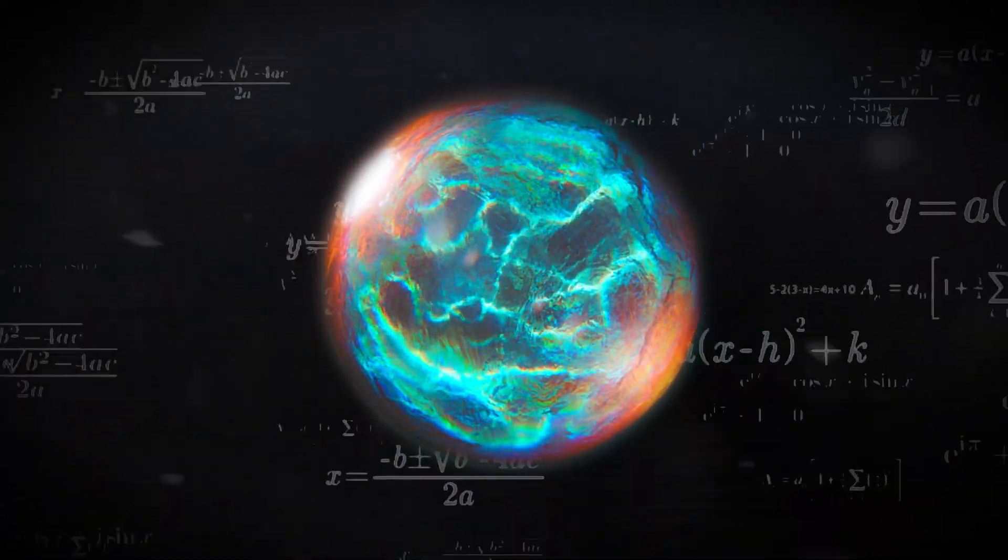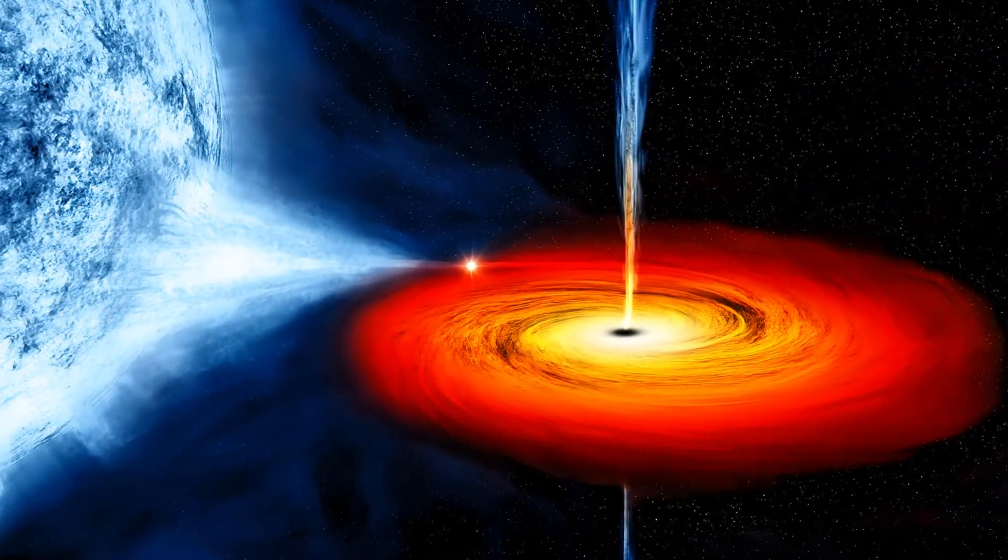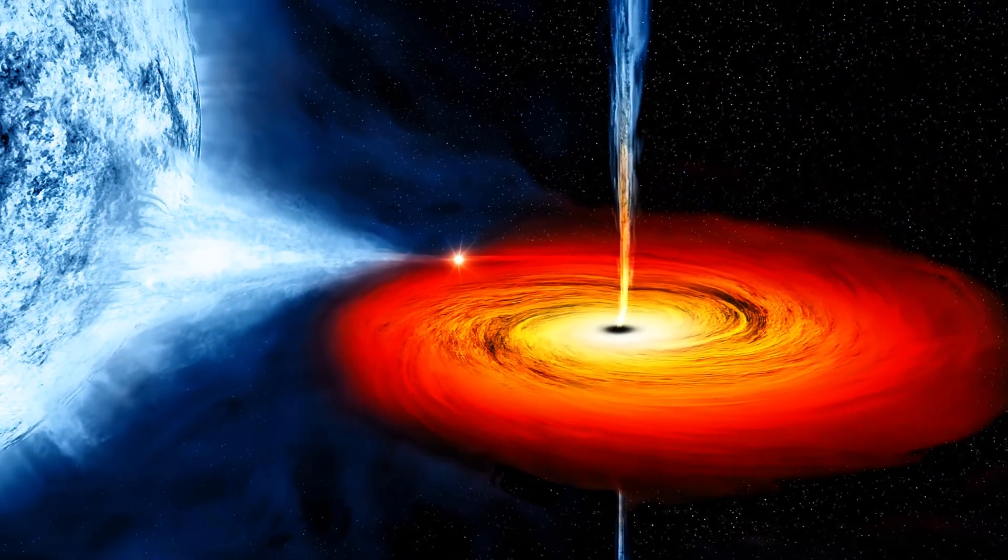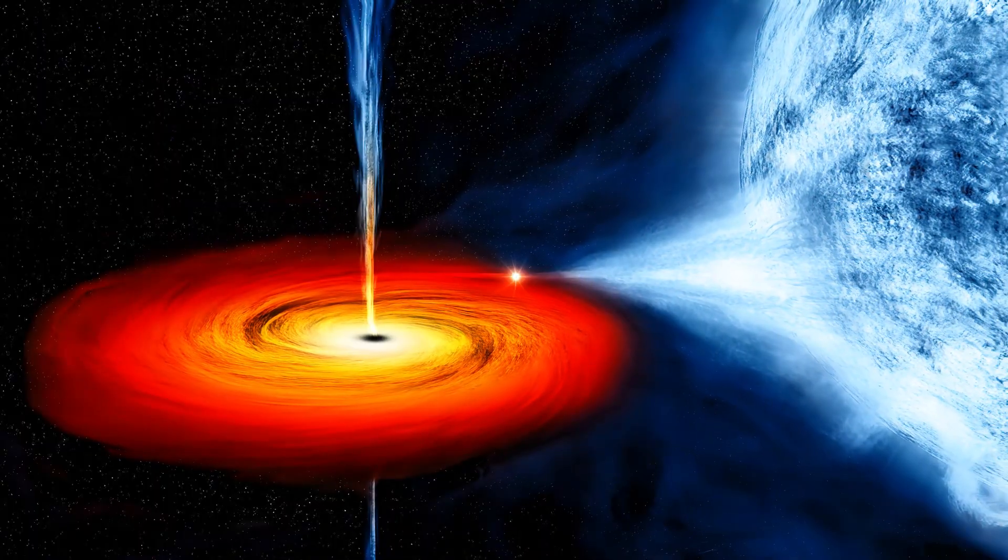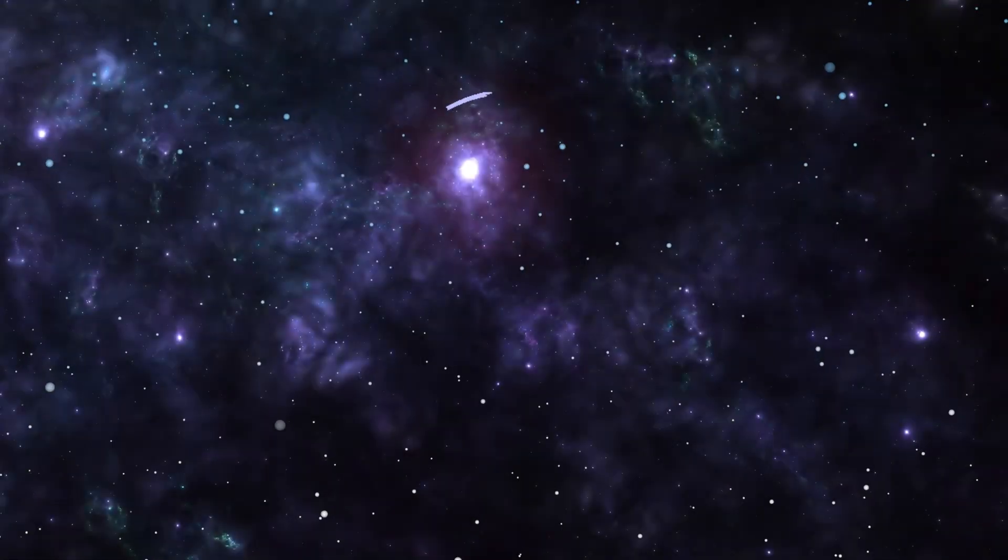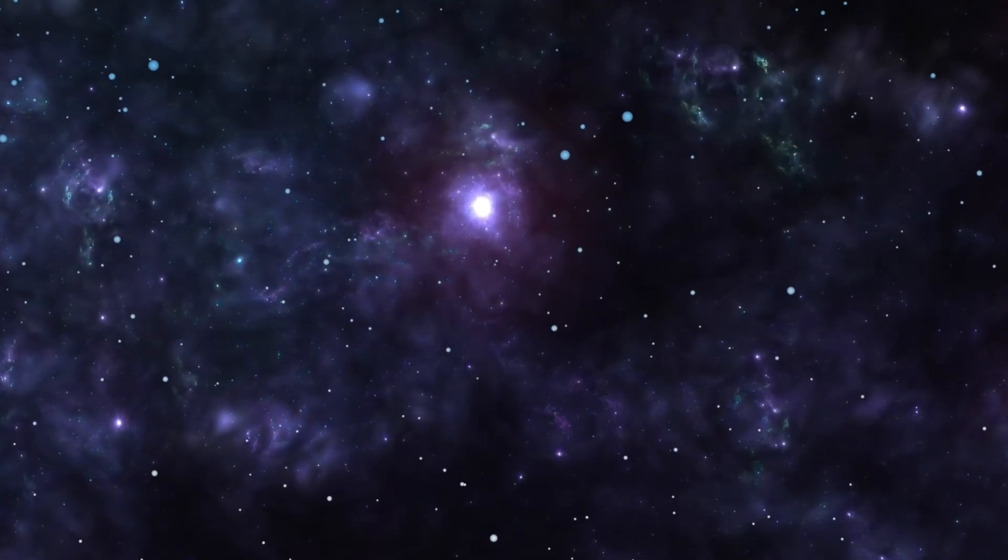White holes were first predicted as a mathematical twin of black holes. When physicists looked at Einstein's equations of general relativity, they realized if you flip the timeline of a black hole, you get something that behaves exactly like a white hole.